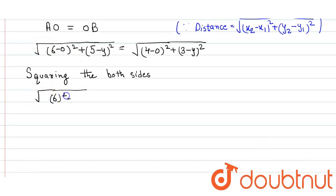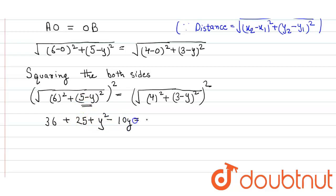Here we get 6 square plus (5 minus y) square. Here we simply get 6 square is 36 plus 25 when we expand this expression. Here we get 25 plus y square minus 10y is equal to 16 plus 9 plus y square minus 6y.